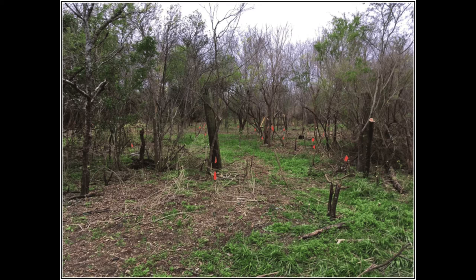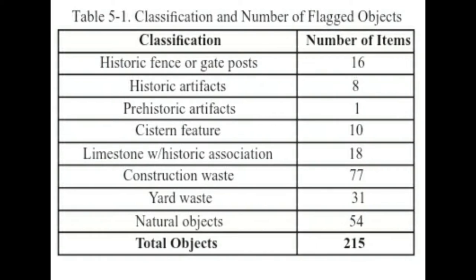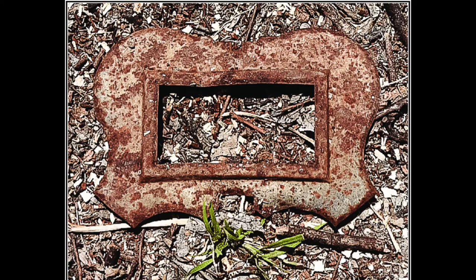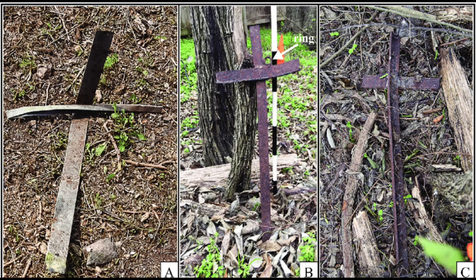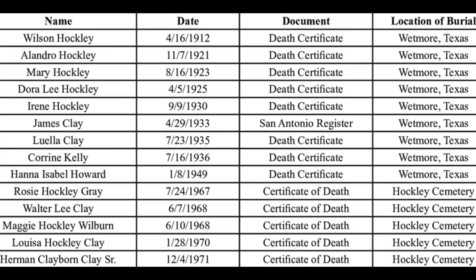In photos from the archaeological survey, orange flags mark possible artifacts of the cemetery's past. The only artifact pieces that looked like they belonged to a grave were a temporary grave marker and pieces of metal welded together to look like a cross. Although there are no names on these crosses or any grave markers, death certificates had to be pulled from the descendants of the Hockleys and the Clays. It is assumed that they are buried at the Hockley Cemetery, and that more people are buried there — not only descendants of the Hockleys or the Clays, but people who lived around that area at the time.